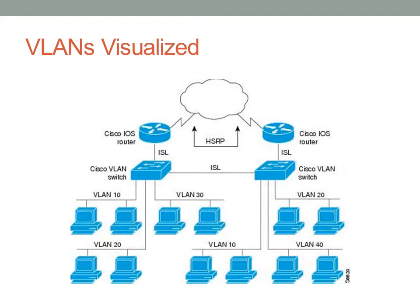The idea is this: there are two computers in VLAN 10 on the left switch and two more in VLAN 10 on the right switch — all four are considered to be in the same broadcast domain. The ISL trunk between the two switches passes traffic for VLAN 10 while keeping VLAN 20 traffic separate. There are also two VLAN 20 computers on each side of that trunk link. On the left we have VLAN 30 and on the right VLAN 40, independent of each other and of the other VLANs. All devices in VLAN 10 are on the same broadcast domain, and all devices in VLANs 20, 30, and 40 are on their respective broadcast domains.